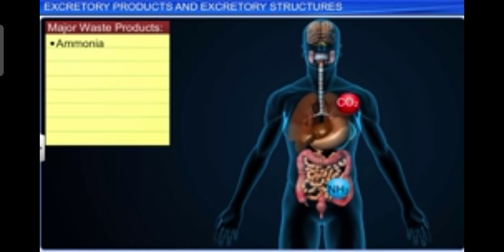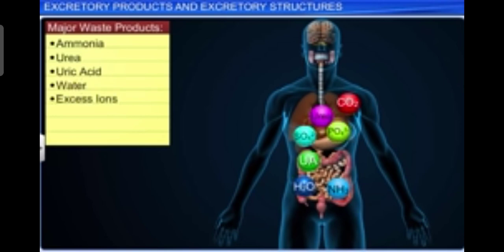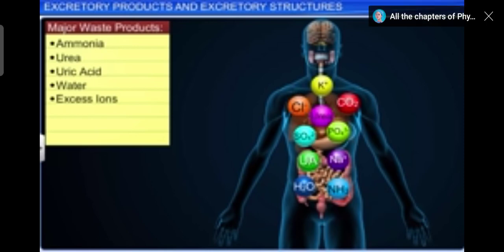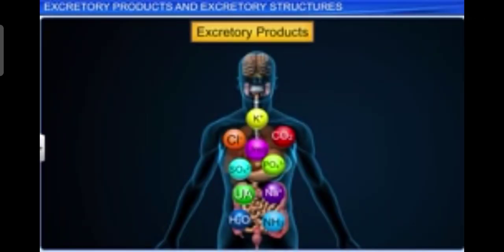Like CO2, various other waste products such as ammonia, urea, uric acid, water, and excess ions like phosphate, sulfate, sodium ion, potassium ion, and chloride ion are produced by our body through different metabolic activities or other means like excess ingestion, digestion, and respiration. These substances have to be removed totally or partially. The process of elimination of waste products from our body is called excretion.